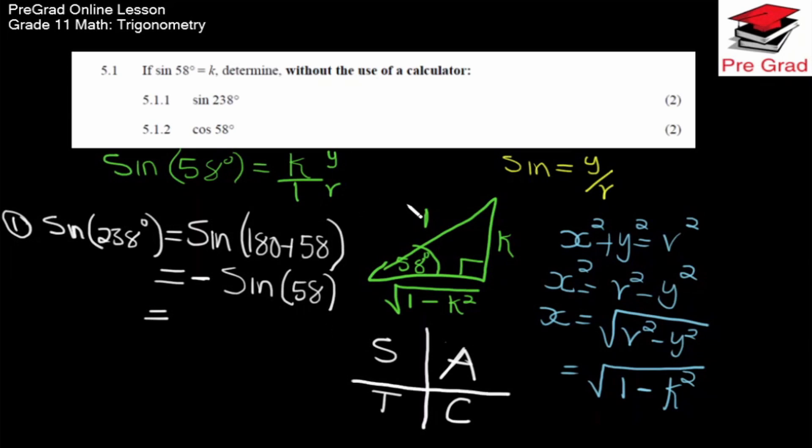So sine of 238 degrees, which is opposite over hypotenuse, equals negative sine of 58 degrees because it's in the third quadrant where sine is negative.